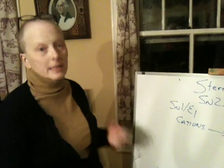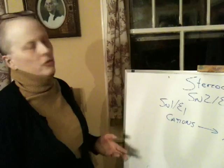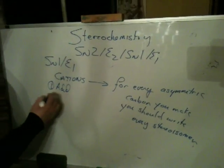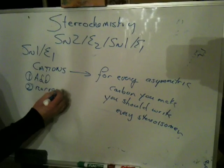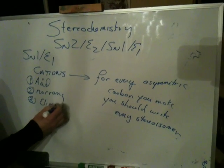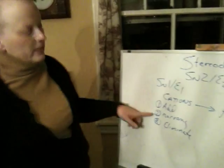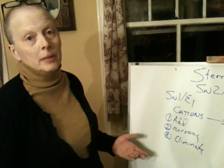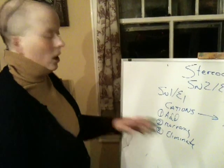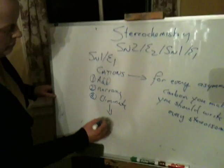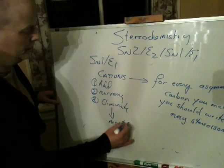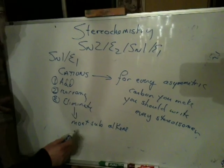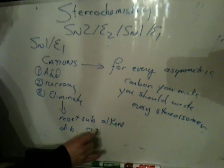Everything we learned about cations in addition reactions applies here. Cations have a repertoire of three things: things add to them, they rearrange, and they can eliminate — which is what we learned here. So once you make the cation, it's going to do the things you learned before. If it looks like it will rearrange, it will rearrange. You're going to add things to it, make tetrahedral centers — some of them asymmetric — and you should draw every combination you can come up with. They also can eliminate, and when things eliminate, you generally obtain the most substituted alkene. I'll try to do an example like this tomorrow. Also realize that with double bonds, there's also the issue of cis and trans.